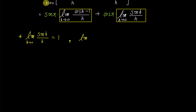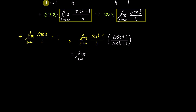Now let's find out the value of the limit of (cosine h minus 1) all over h as h approaches 0, for the first yellow box. To find the value of this limit, let's multiply the numerator and denominator by (cosine h plus 1). The numerator becomes cosine squared h minus 1, and the denominator becomes h times (cosine h plus 1).